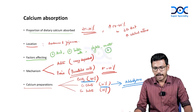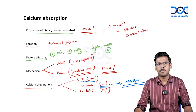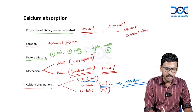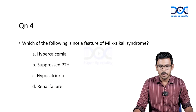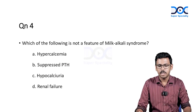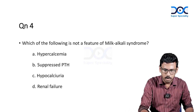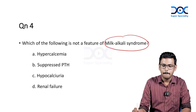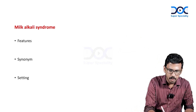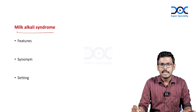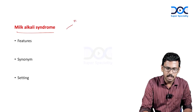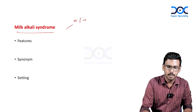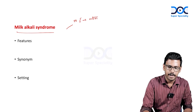Next question: which of the following is not a feature of milk-alkali syndrome? What is milk-alkali syndrome? We have learned that 90% of calcium absorption is active and 10% is passive.